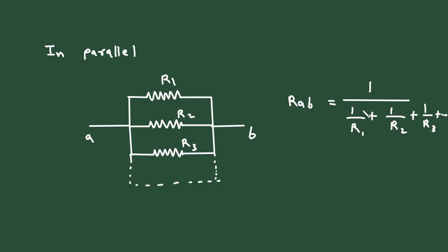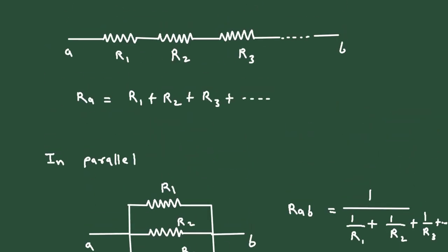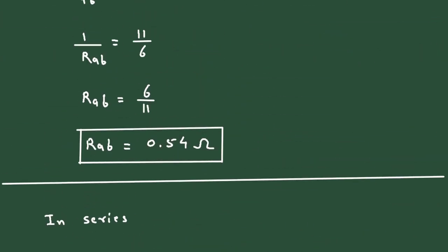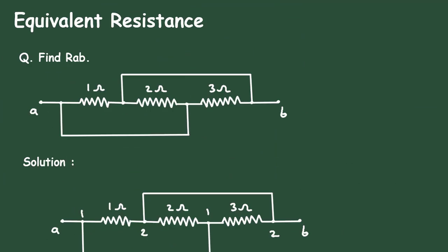This is for parallel resistances and this is for series resistances. This is how we can solve equivalent resistance. To get the free nodes of electrical circuits, check the link in the comment section and install the app for free. Thanks for watching.